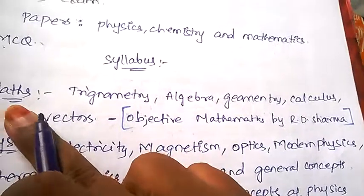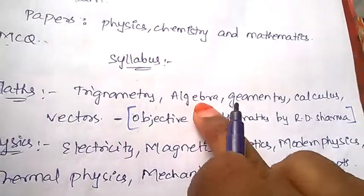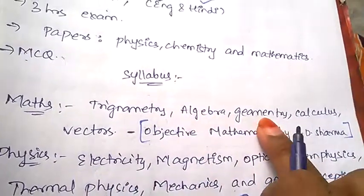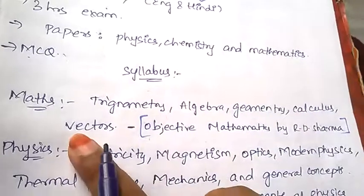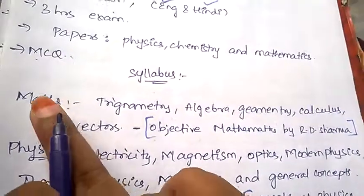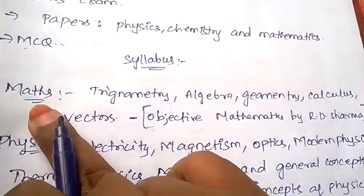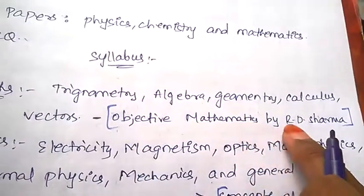Now let's start with the syllabus. Coming to mathematics, the syllabus is trigonometry, algebra, geometry, calculus, and vectors. The standard book for JEE Advanced mathematics is Objective Mathematics by RD Sharma.